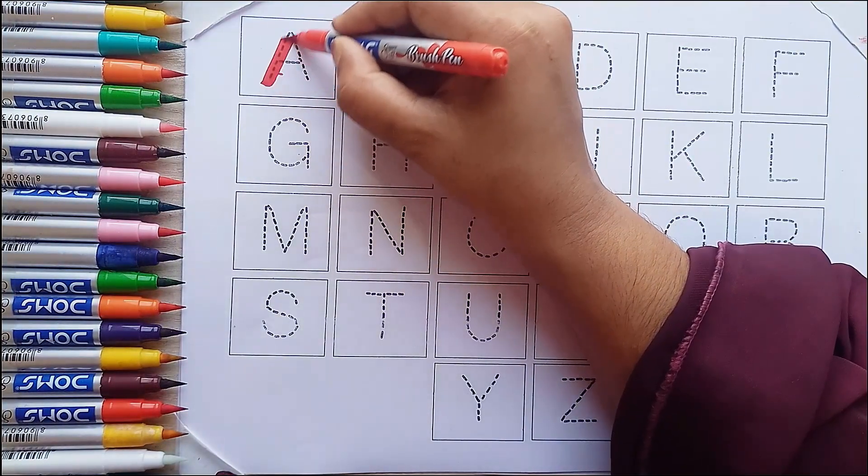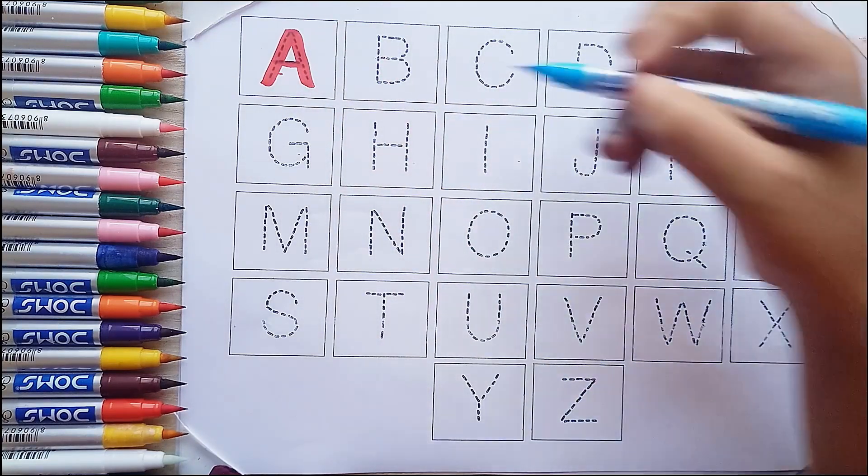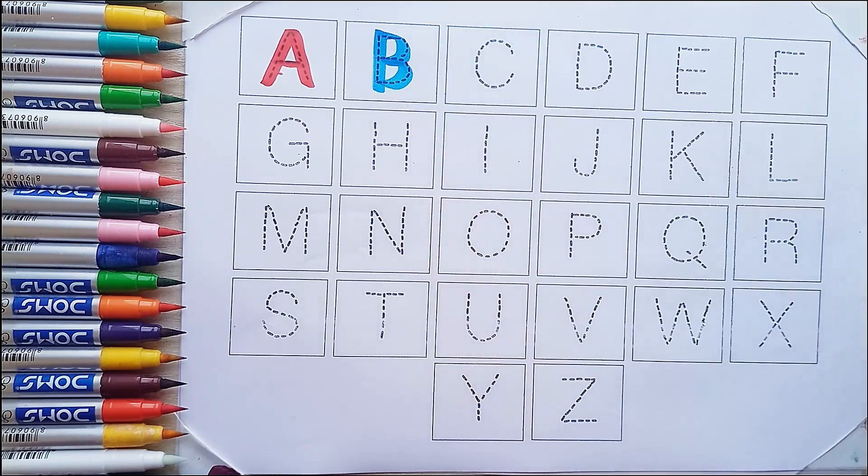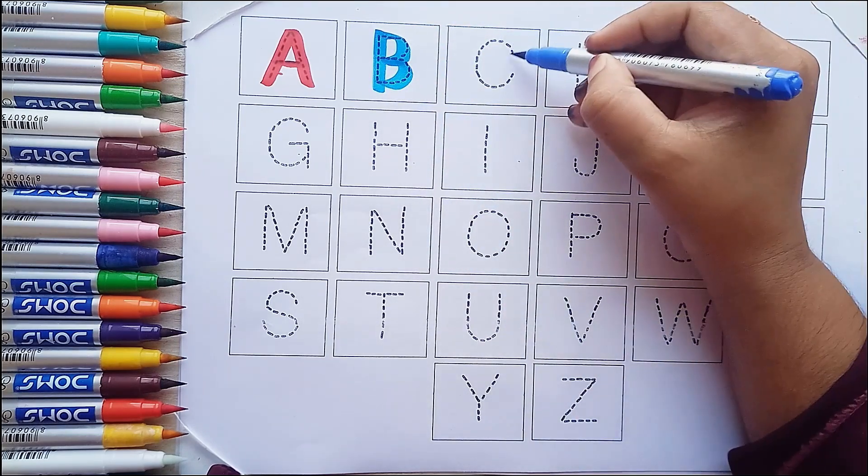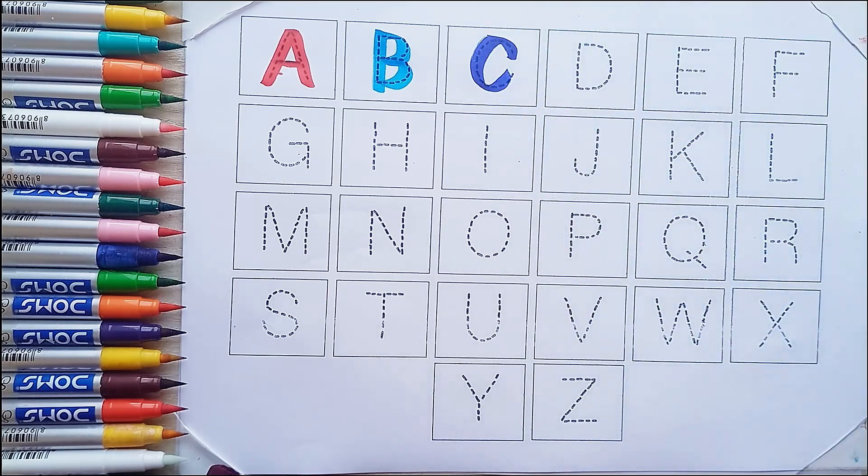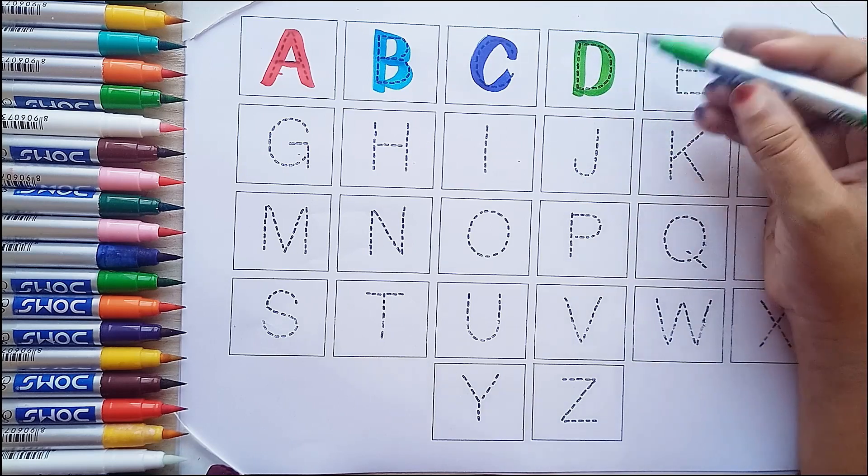Red color A, A for ant. Sky blue color B, B for ball. Blue color C, C for cat. Light green color D, D for doll.